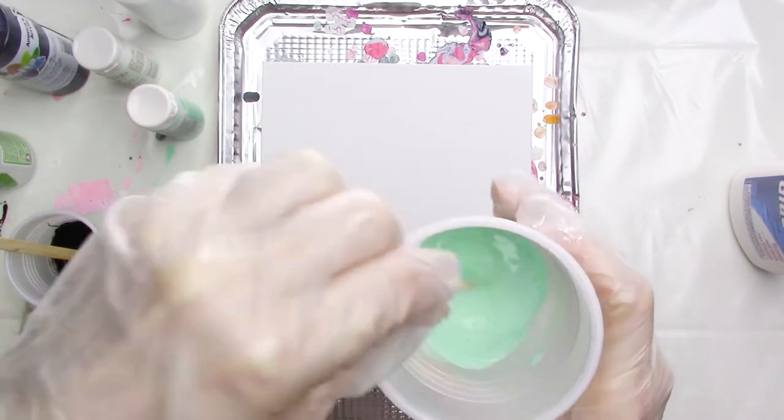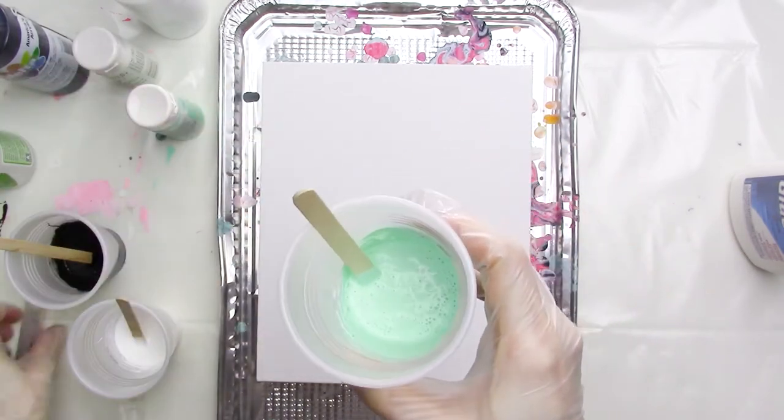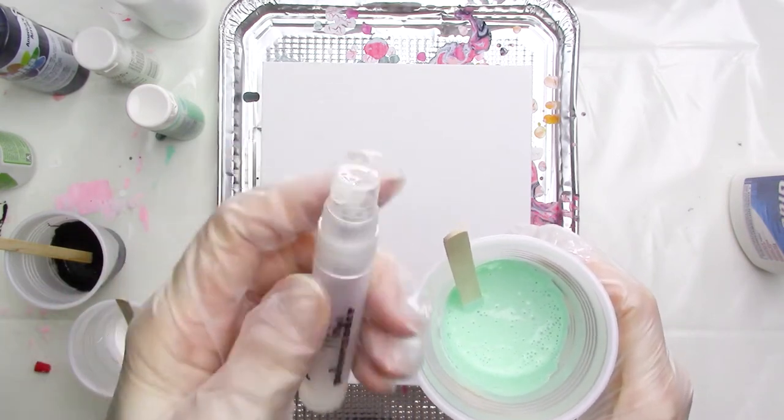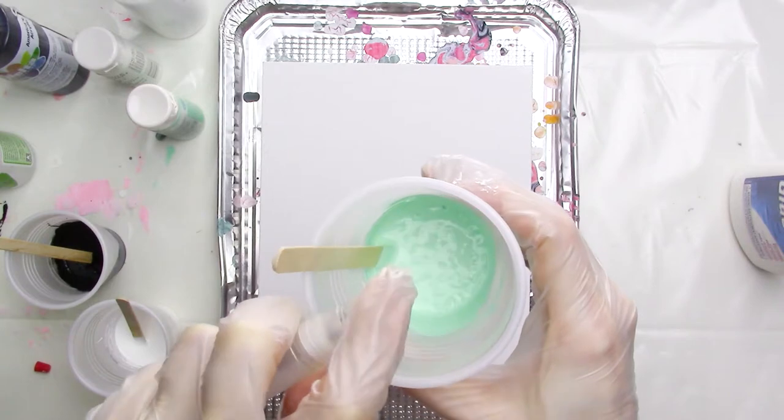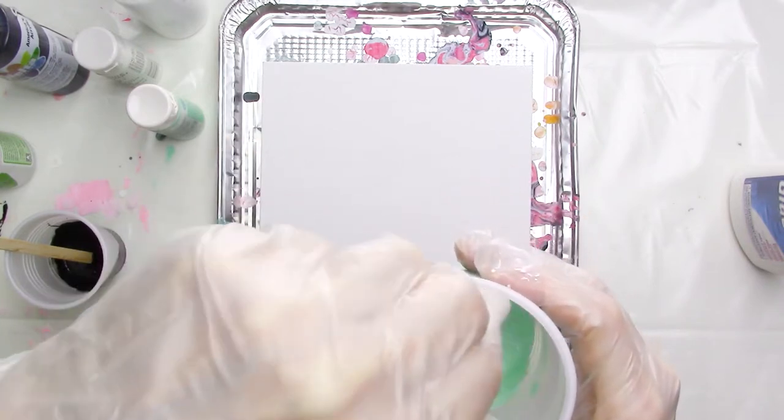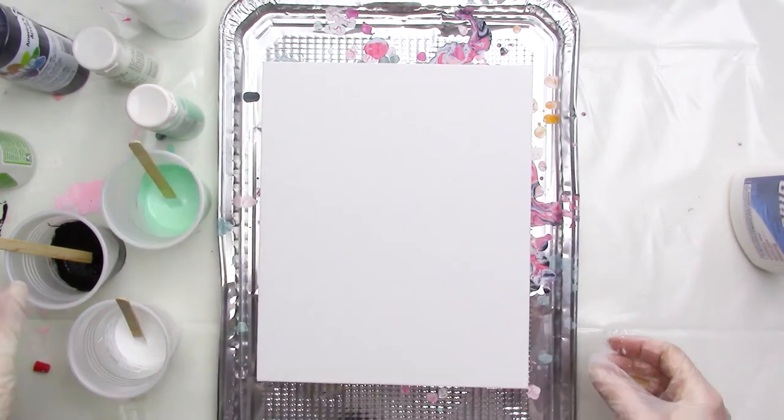I mentioned earlier that I use isopropyl alcohol to get rid of bubbles in my paint mixture, and I do this using a little mister bottle that's filled with the alcohol. I give the paint mixture a few spritzes of the alcohol, then stir it around until the bubbles pop, and I repeat this process as many times as I need to get rid of most of the bubbles.